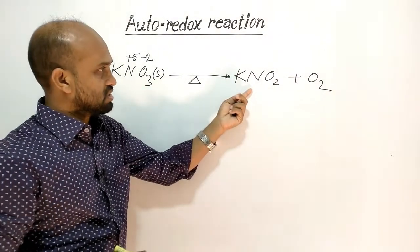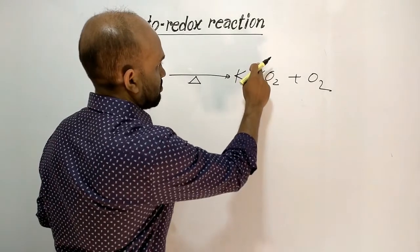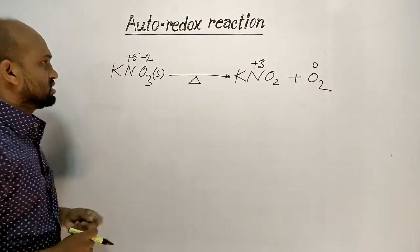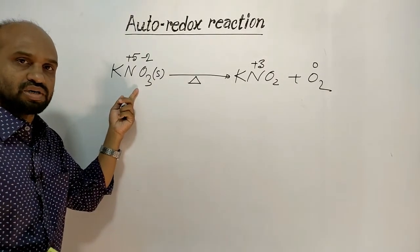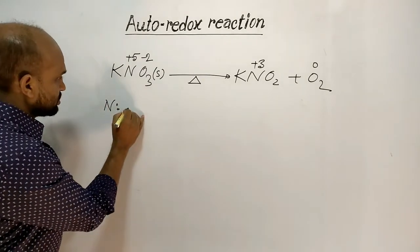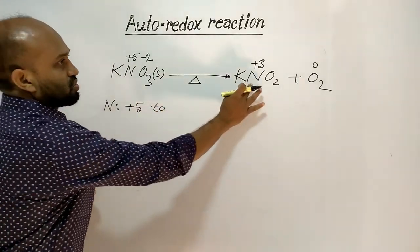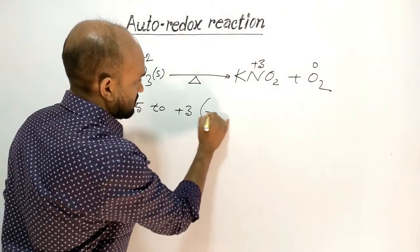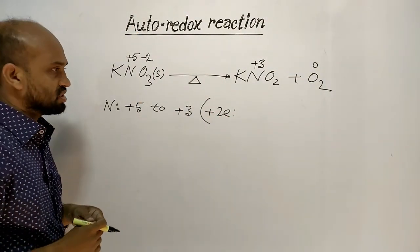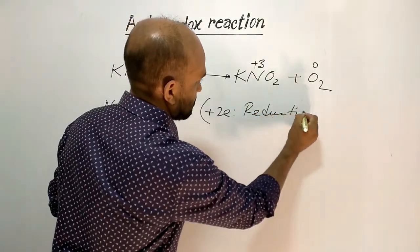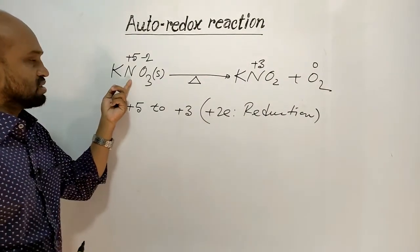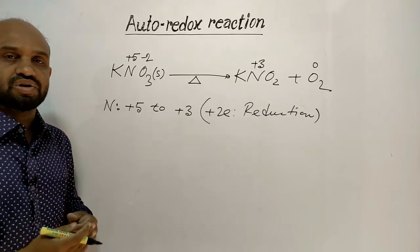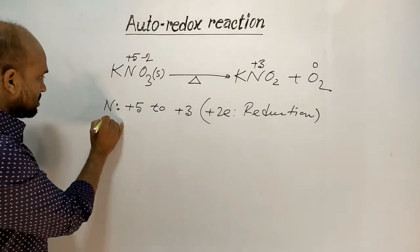In the product potassium nitrite, the oxidation number of nitrogen is +3, and in oxygen gas the oxidation number of oxygen is 0. The oxidation number of nitrogen changed from +5 to +3, meaning nitrogen accepted two electrons. Acceptance of electrons is reduction, so here nitrogen is reduced.